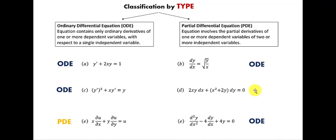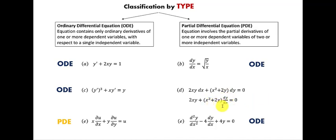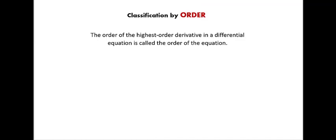For equation D, I don't see Lagrange's notation with prime, or Leibniz notation dy/dx, but I do see dx and dy — these are called differentials. We can divide each term on both sides by dx, and then we can clearly see dy/dx, the first derivative. So equation D is an ordinary differential equation with no partial derivatives involved.